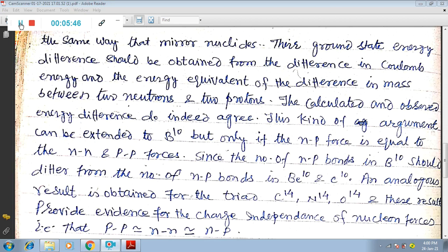the same way that mirror nuclei [do]. The ground state energy difference should be obtained from the difference in Coulomb energy and the energy equivalent of the difference in mass between two neutrons and two protons. The calculated and observed energy difference do indeed agree.